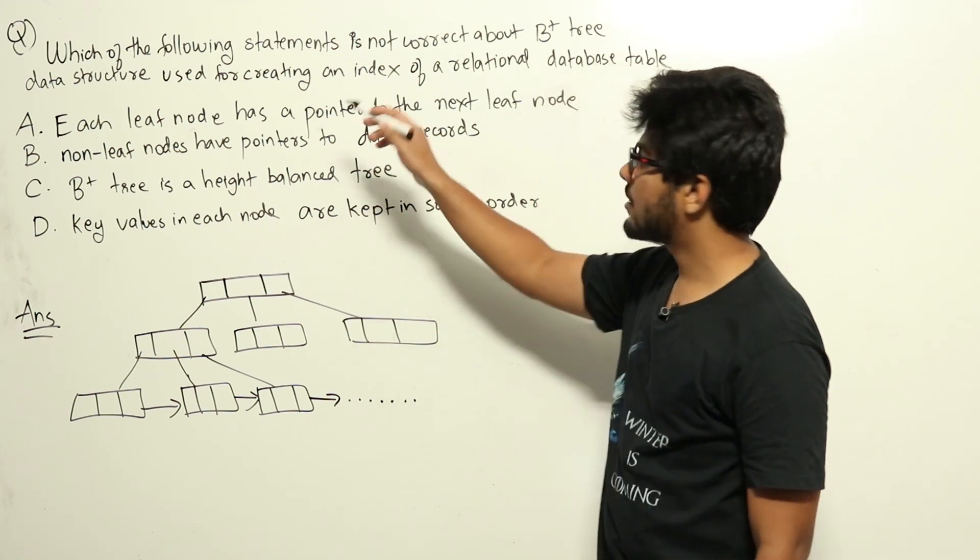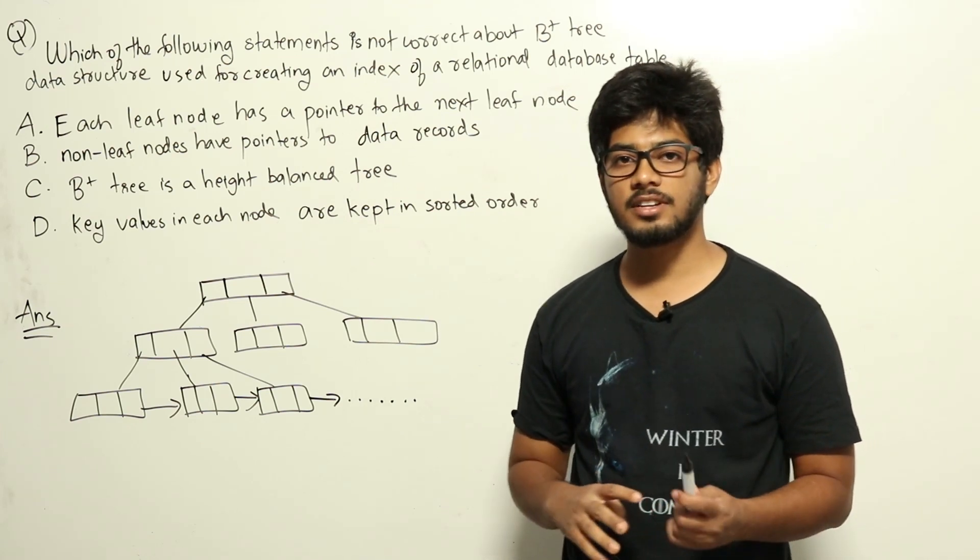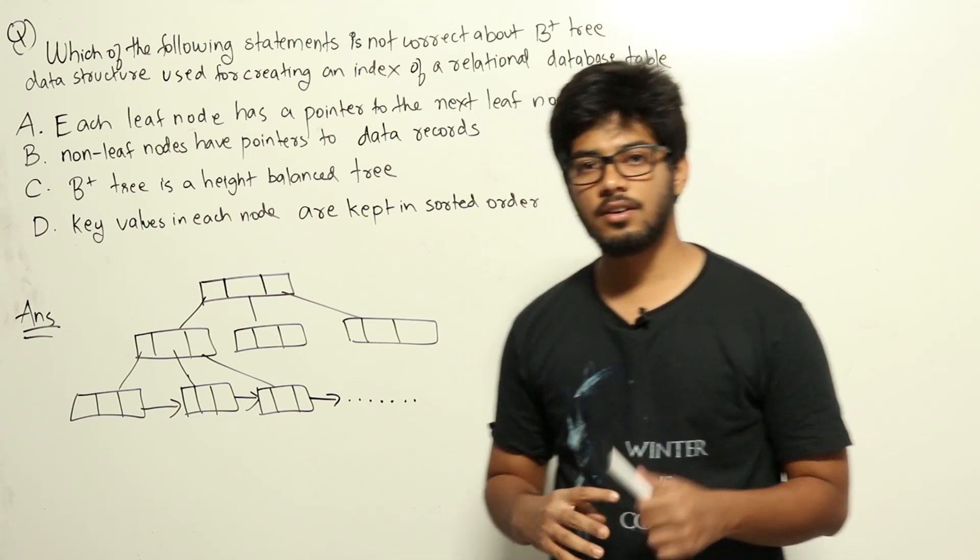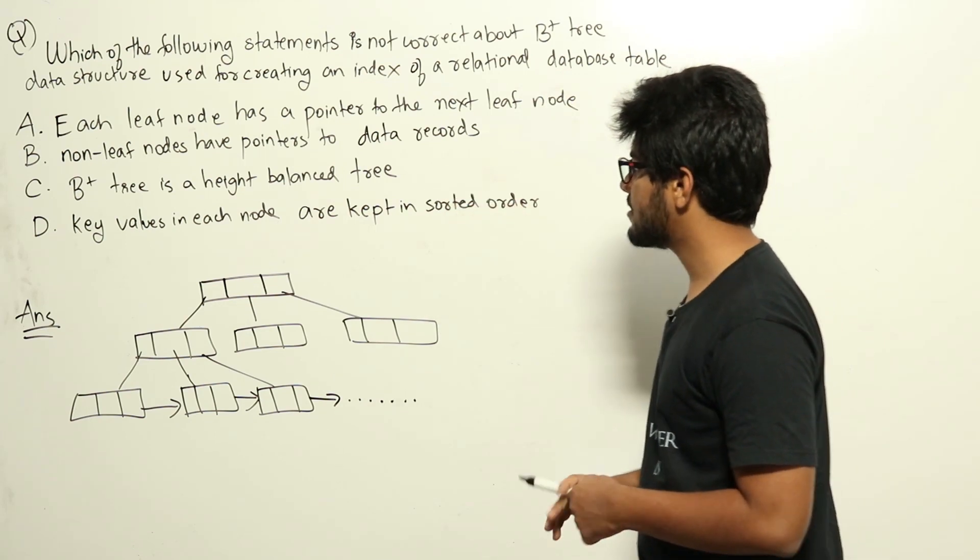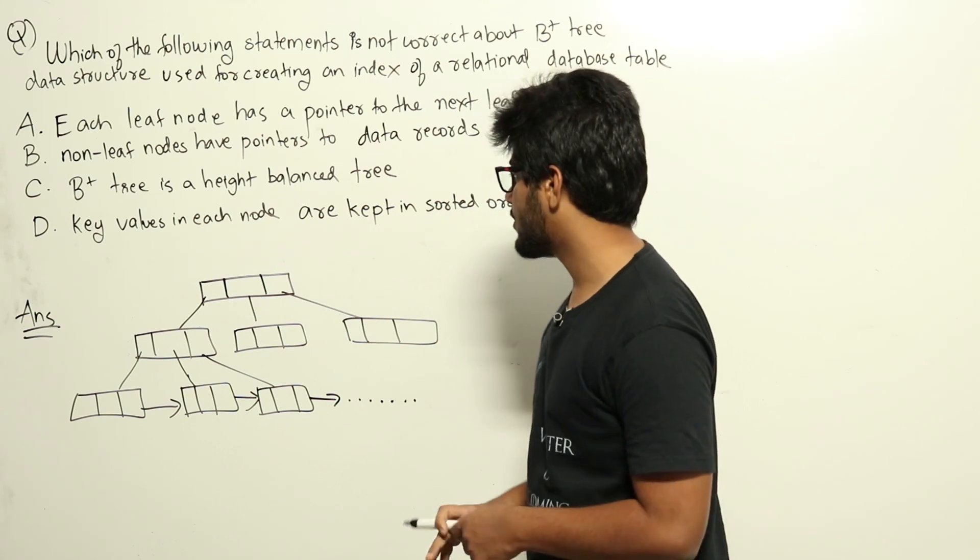Now, in the question they are asking us about B plus tree data structure. This is from DBMS section. To learn more about B plus tree data structures, please refer to the video lectures on the topic. Now, here I will give a brief summary of B plus trees. B plus trees are used for indexing in database records.